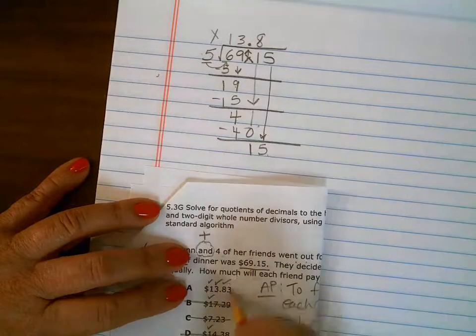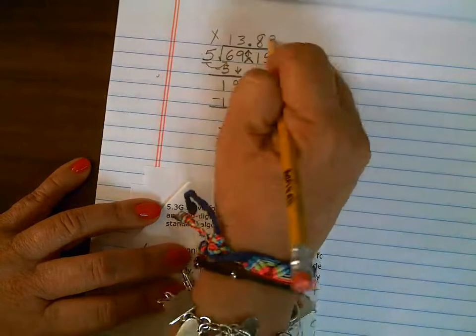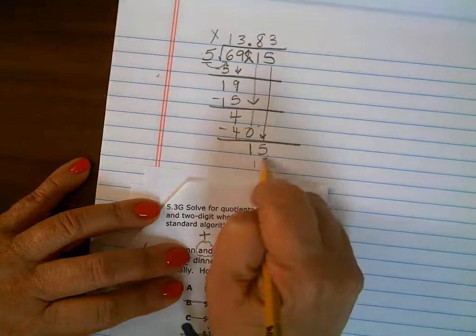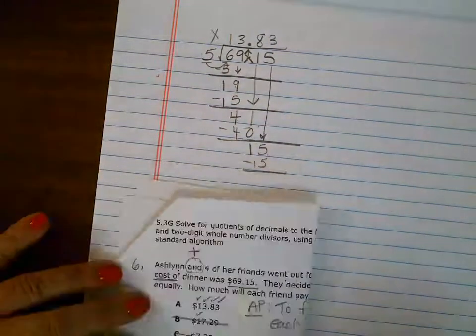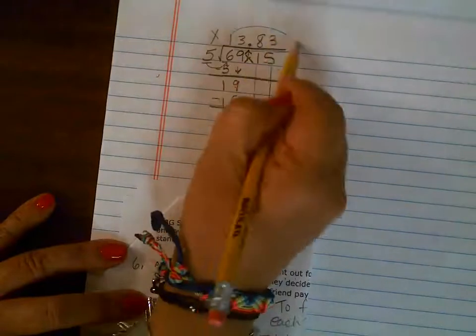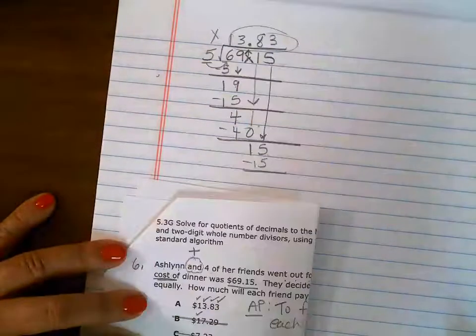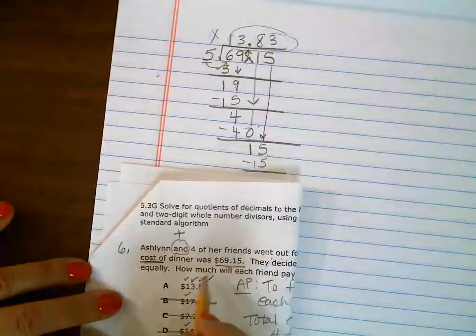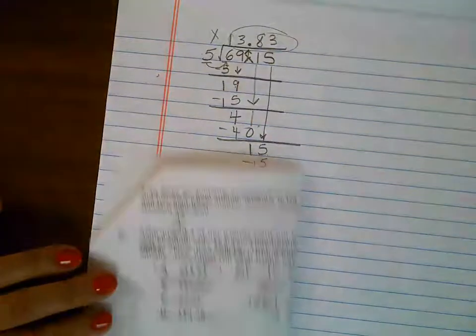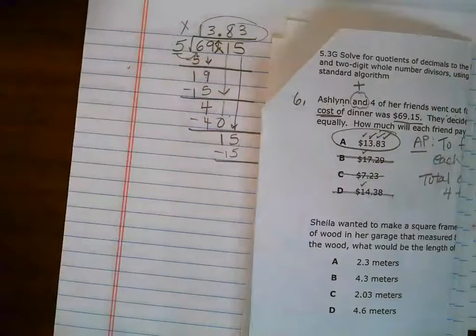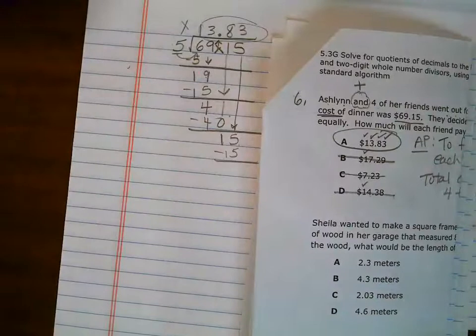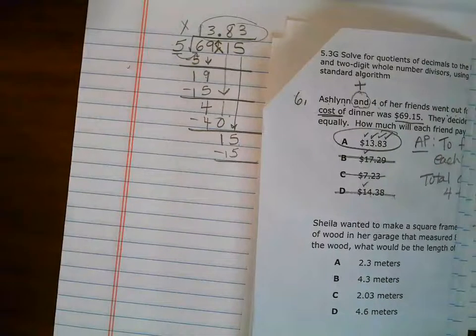Five goes into 15 three times. Five times three is equal to 15. So how much will each girl then pay? That's absolutely right: $13.83, and that's the correct answer. See how much easier it is? Use your answer choices to guide you through. All right, let's look at them. We'll see you on the next round. Bye!